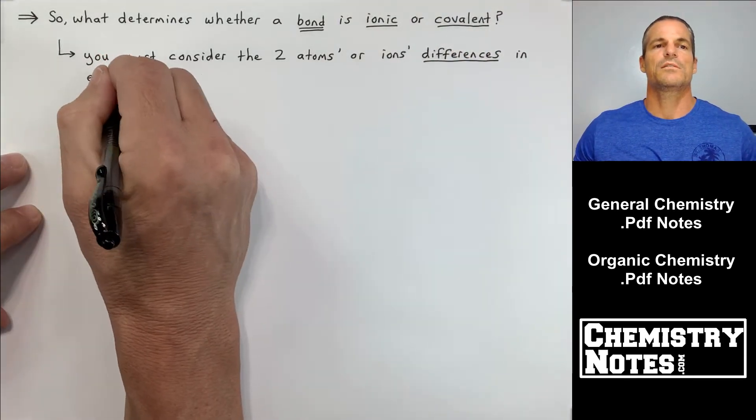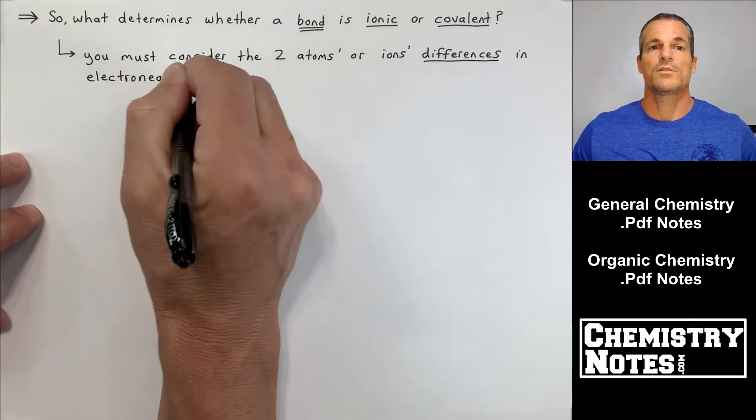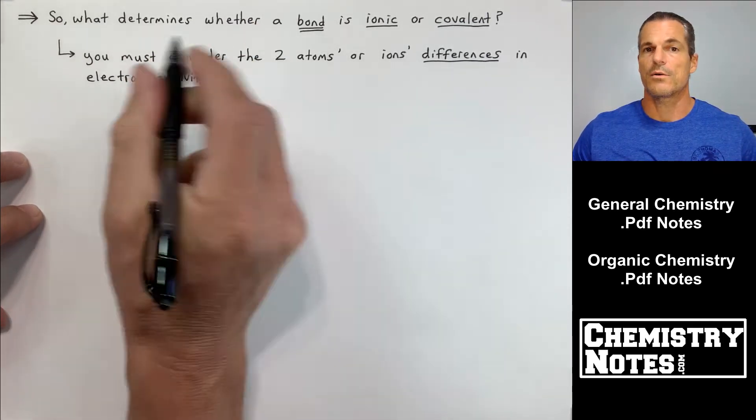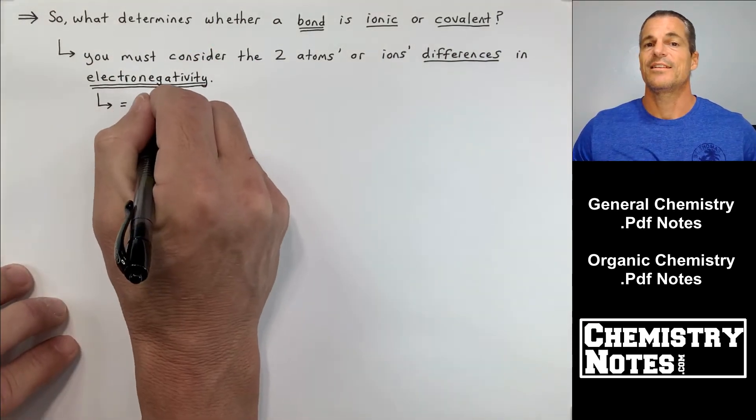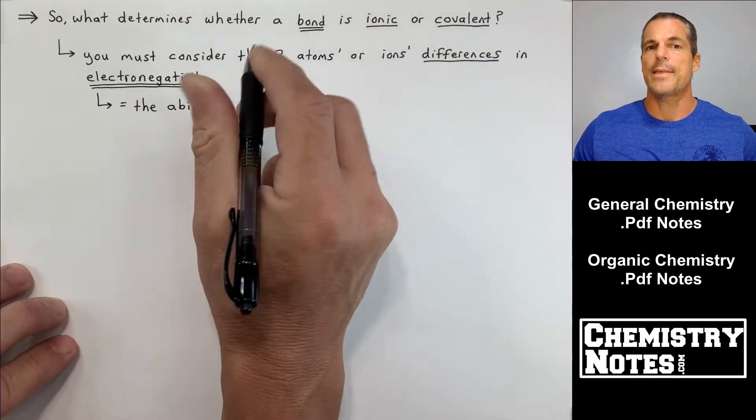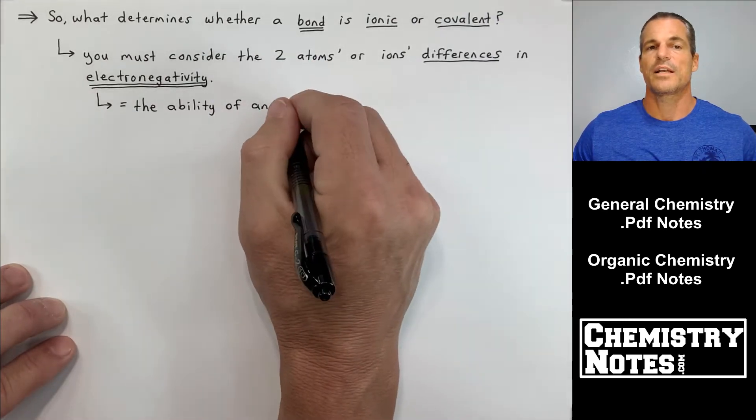So at the top of our notes here it says, so what determines whether a bond is ionic or covalent? In order to determine that we have to take a look at the differences in the two atoms or ions electronegativity.